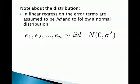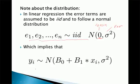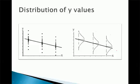As a note about the distribution: in linear regression, the error terms are assumed to be independently, identically distributed. The error term for one observation doesn't depend on the error term for another — they're supposed to be uncorrelated — and they're assumed to follow a normal distribution with mean 0 and variance sigma squared. That actually implies that the y's also follow a normal distribution with mean beta 0 plus beta 1 times x_i and variance sigma squared.